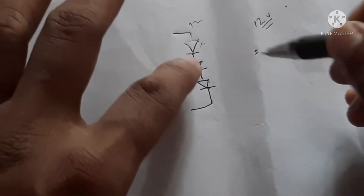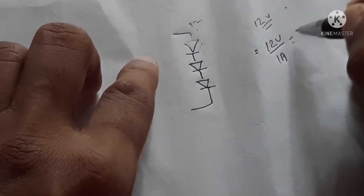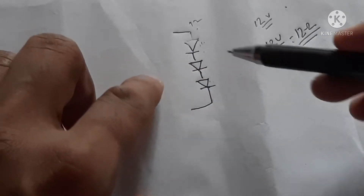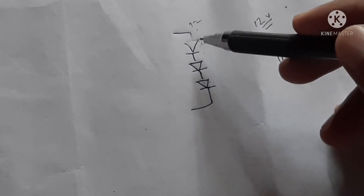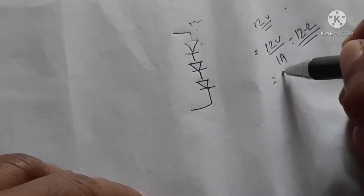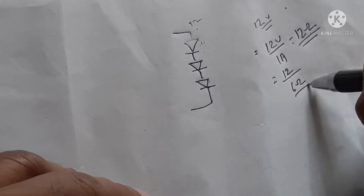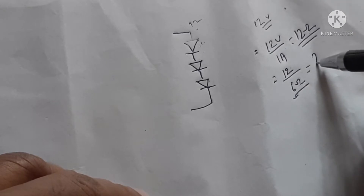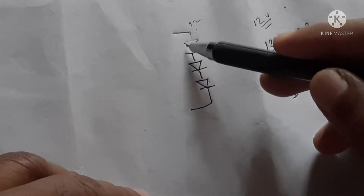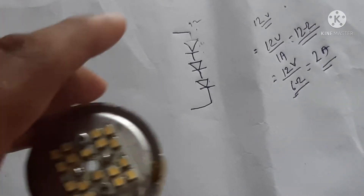The maximum current allowed to pass through the LED is 1 ampere. So if 12 volts is supplied and the current is 1 ampere, the resistance of the LEDs is 12 divided by 1, which equals 12 ohms. But after some time the LED becomes heated up and the resistance of the LED becomes very low — say from 12 ohms it changes to 6 ohms. Then the current will be 12 volts divided by 6 ohms, which equals 2 amperes. Since the maximum current allowed is 1 ampere, the LEDs will get damaged. To avoid that, we need a constant current.